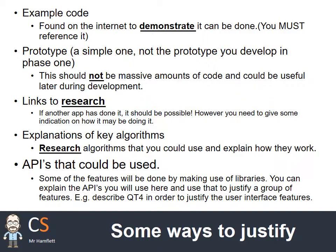Some ways you can justify that a feature is computable: the most obvious is example code — find code on the internet to demonstrate it can be done. Some people might think this is cheating, but it's not, as long as you reference it. It is normal for programmers to find example code — it's not unusual in industry. You can't just copy-paste it as your finished program, but you must reference it and it can be used as evidence that it can be done. It will also help you get ideas of how you could code it.